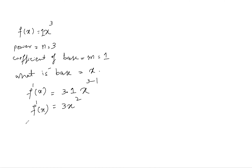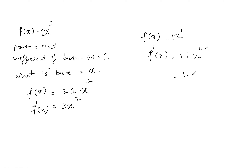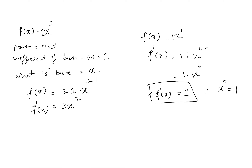Similarly, for the derivative of x: the power is 1, coefficient of base is 1, so 1 times 1 gives x^(1-1) = x^0. Since anything raised to power 0 is 1, we conclude that the derivative of x is 1.